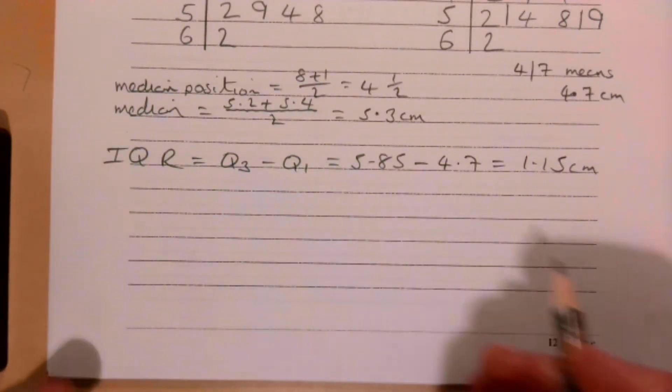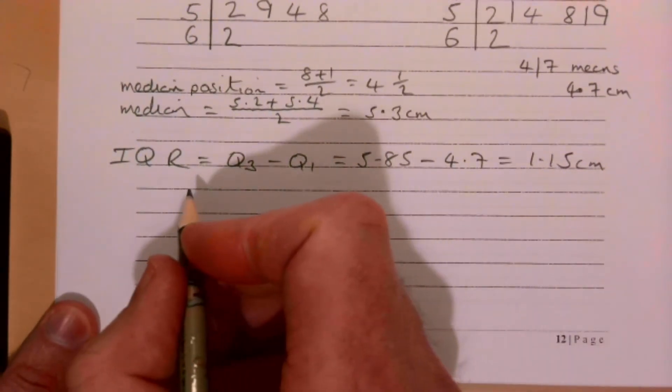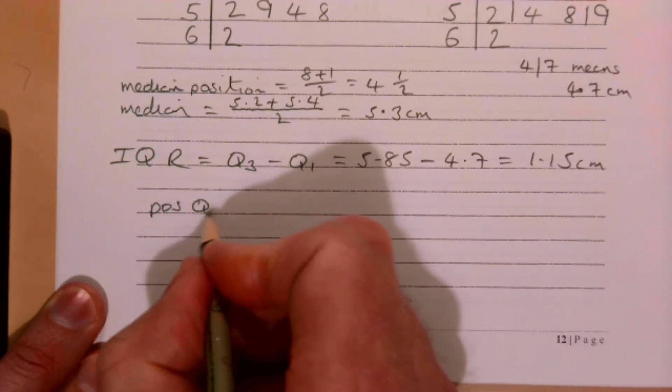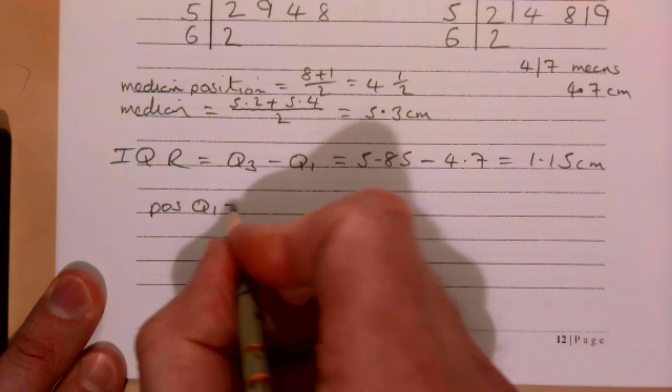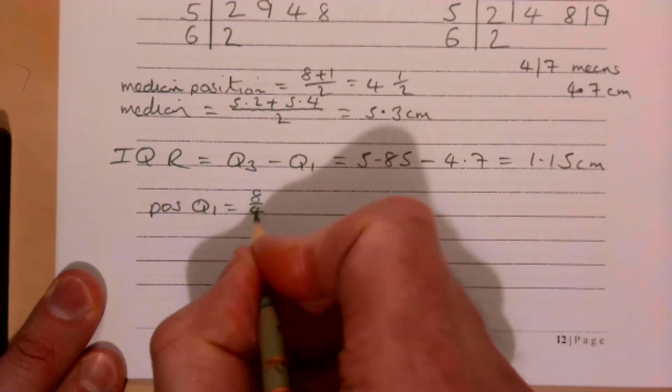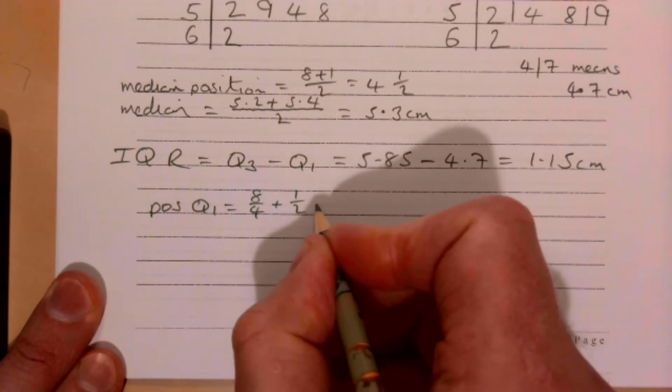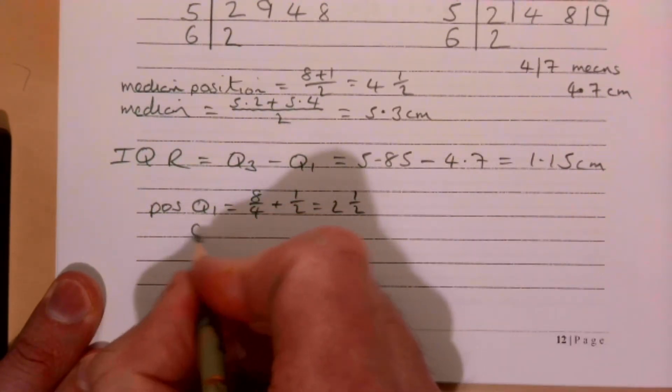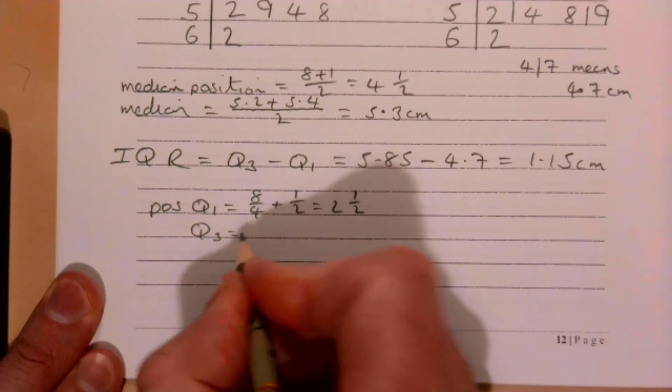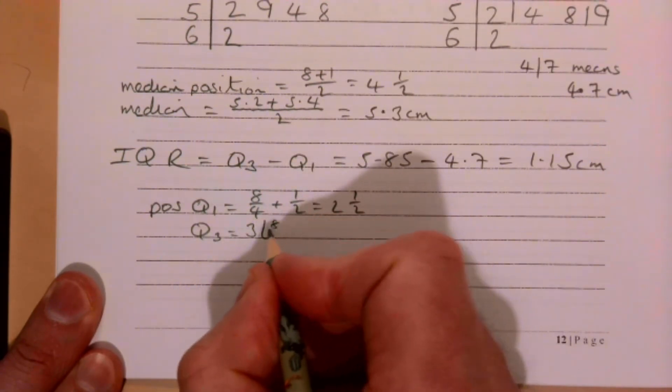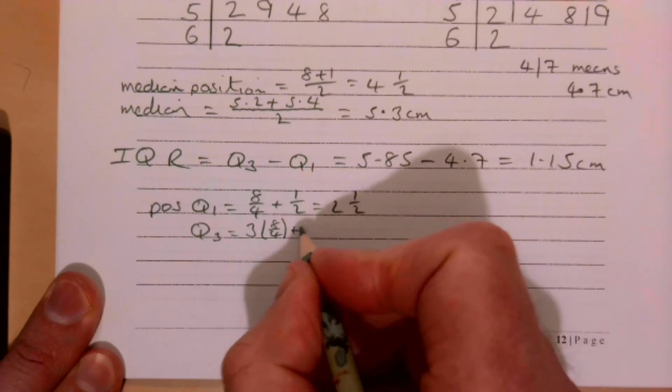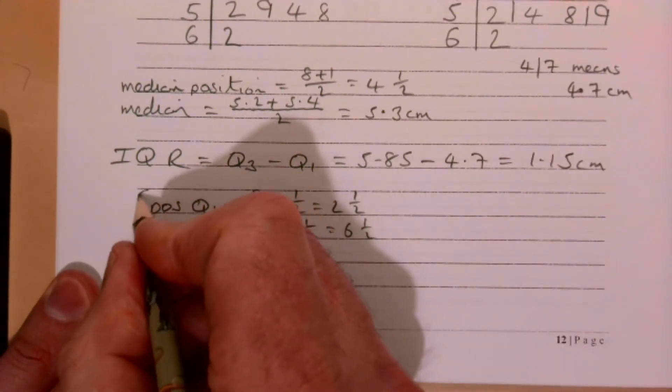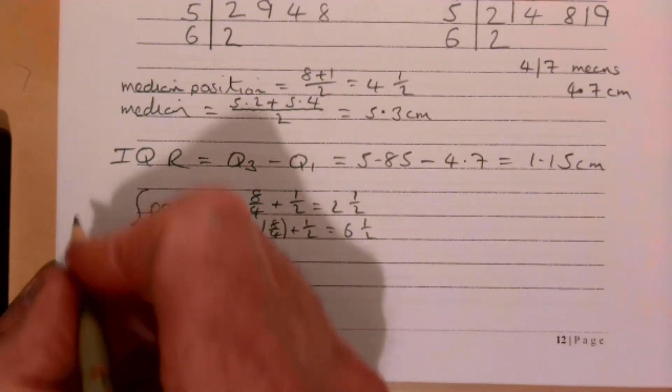Just a couple of things to take down here. The position of Q1 is n over 4 plus a half, so 8 over 4 plus a half is 2.5. The position of Q3 is 3 times n over 4 plus a half, so 6.5.